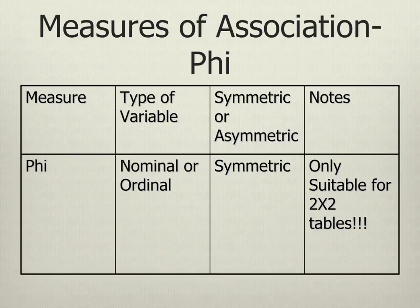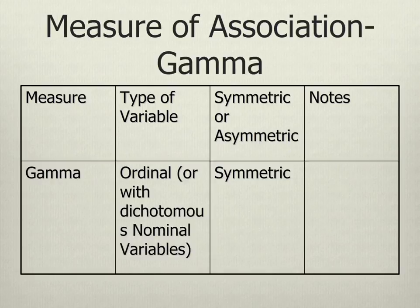Phi is also for nominal or ordinal data. It will give you the direction even though a nominal variable is involved — but phi only works for two by two tables where there are two columns and two rows. In that case, all it's telling you is whether as you move from one column, you move to the upper or the lower row. Phi is your best choice for two by two tables. Gamma is the appropriate measure of association for ordinal by ordinal or ordinal by dichotomous nominal variables. It's symmetric, so it will give you the direction as well as the strength of the relationship. For ordinal by ordinal relationships, we're going to be using gamma for this class.